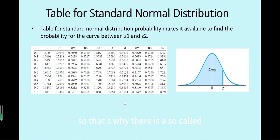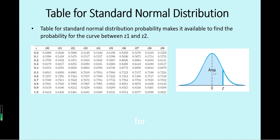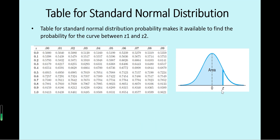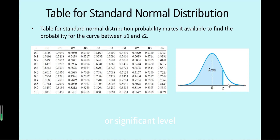That's why there is a so-called standard normal distribution table, which is used to calculate the cumulative probability for this shaded area for a random variable less than a given z value — also called the critical value. The remaining white area is also often called the p-value, alpha, or significance level.